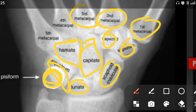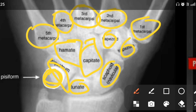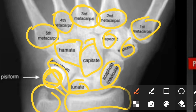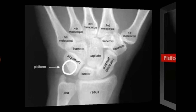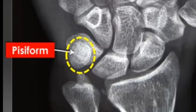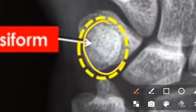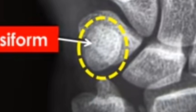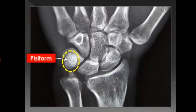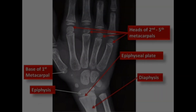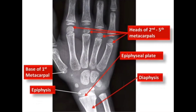The metacarpals are first, second, third, fourth, and fifth. The lower end of the ulna is here. The head region is the upper end, which is on the other side. You can see this is the head — the diaphysis — the surface of the first metacarpal, and the second to fifth metacarpals.